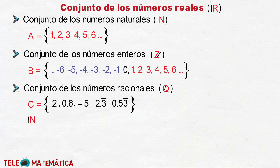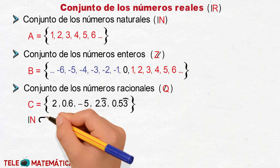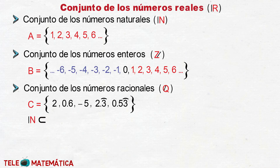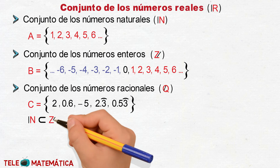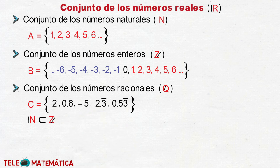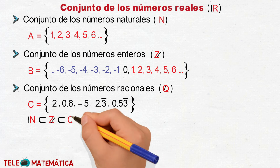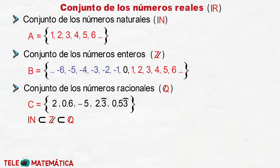Hasta este punto podemos concluir que el conjunto de los números naturales es un subconjunto del conjunto de los números enteros, y a su vez ambos conjuntos son subconjuntos del conjunto de los números racionales.